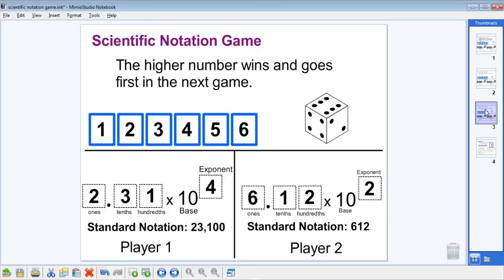As we see, those numbers turn out to be twenty-three thousand one hundred for player one, and player two has a score of only six hundred twelve. Player one wins the game and goes first in the next game.